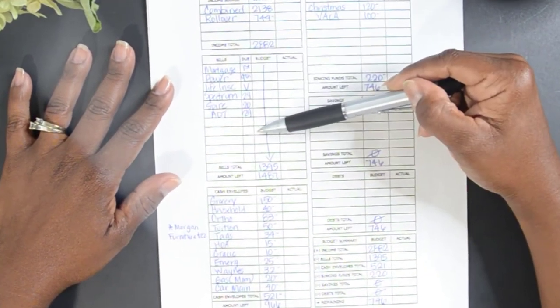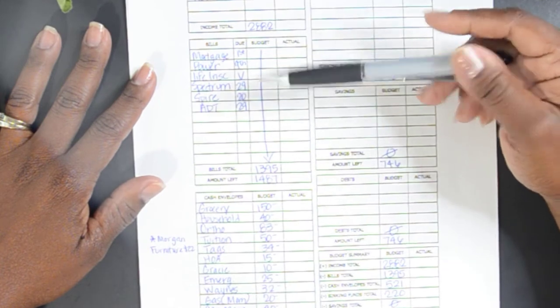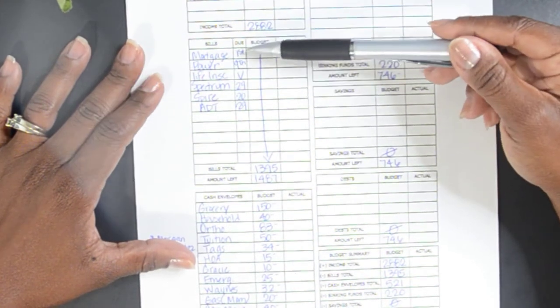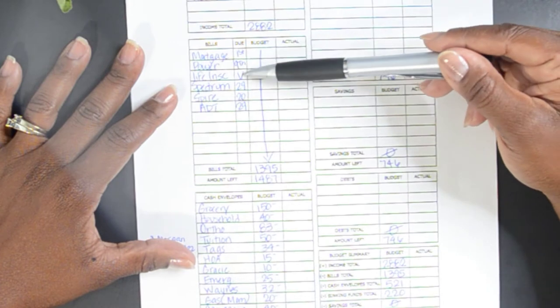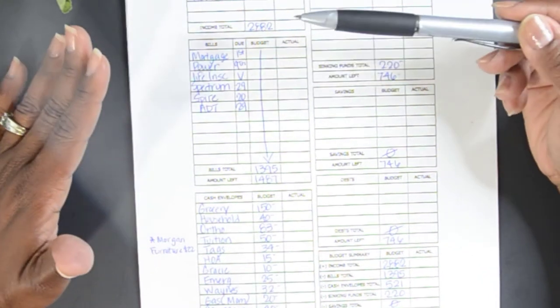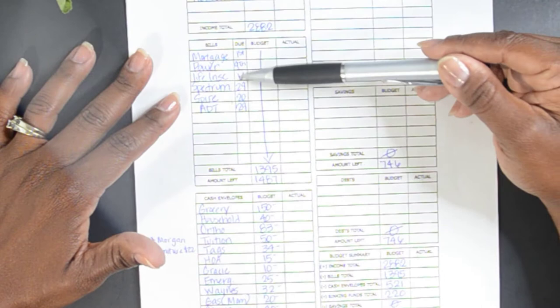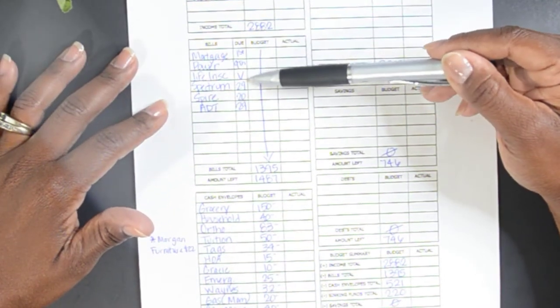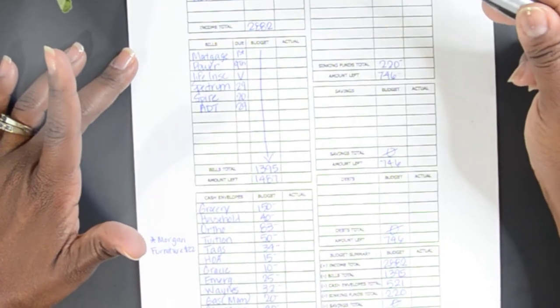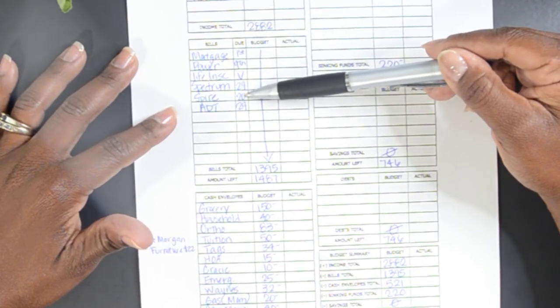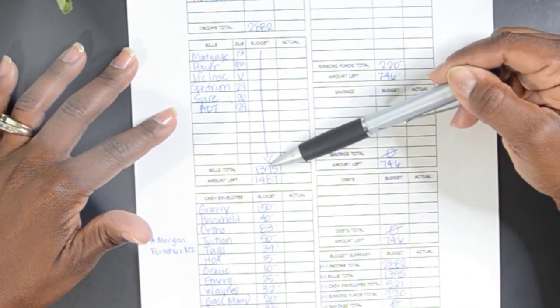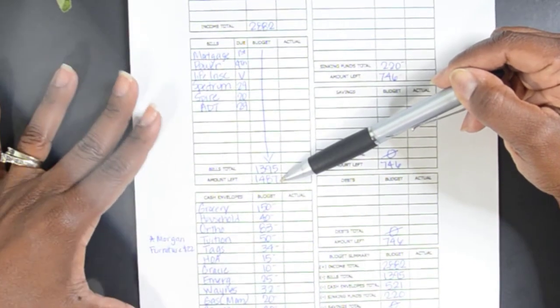These items here are items that either come out with bill pay or ACH or something of that nature, so I don't actually take any cash money out of the bank for these. And that is my mortgage, our power bill, our life insurance, and our life insurance comes out at different times of the month. So I just have a certain amount that comes out each pay period to cover those various days. And then we have Spectrum, which is our cable, and we are about to get rid of that. I cannot wait. I am so fed up with Spectrum. But that's neither here nor there. And then we have Spire, which is our gas, and then ADT, which is our home security.